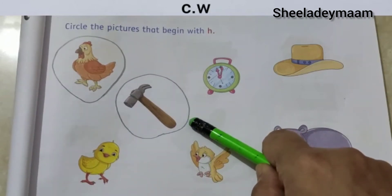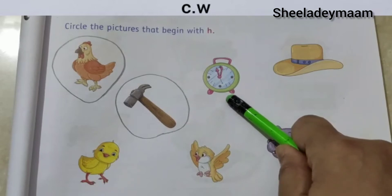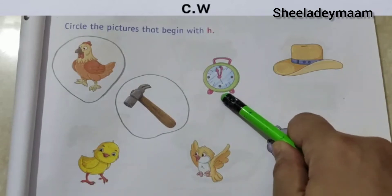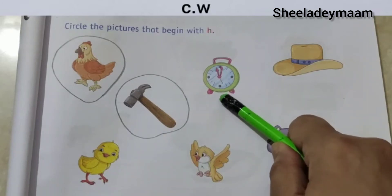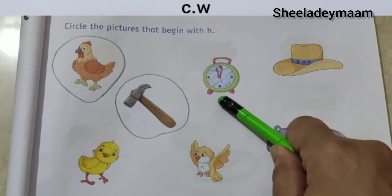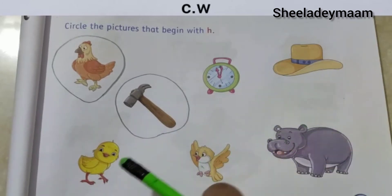Our next picture is — what is this, children? This is a clock. C for clock. So children, we don't have to circle it because it does not start with the letter H. In the same way, you have to do this.